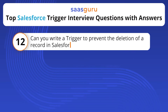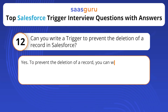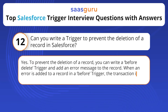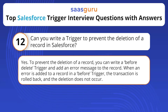Can you write a trigger to prevent the deletion of a record in Salesforce? Yes. To prevent the deletion of a record, you can write a before-delete trigger and add an error message to the record. When an error is added to a record in a before-trigger, the transaction is rolled back and the deletion does not occur.